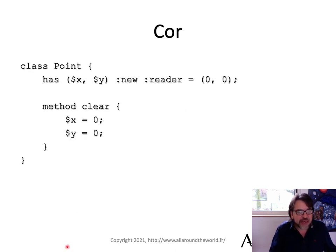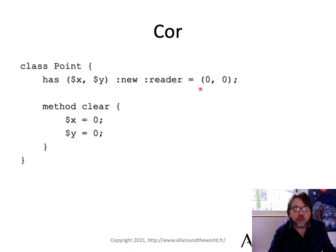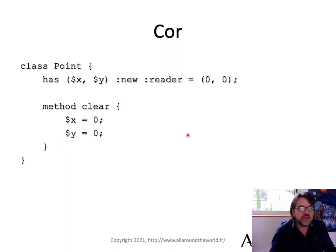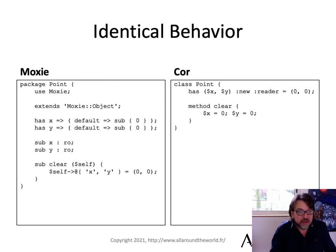Here's what I have. Class Point has X and Y. 'new' means it's required in the constructor. Each of those has a reader, so you can call object->x or object->y. We also have default values of zero and zero for each. Because we have default values, you can pass them to the constructor but it's not required. And then if you want to clear those values, you just set them to zero. It's clean and simple. You can see Moxie over here and Cor over here — how much cleaner it is.